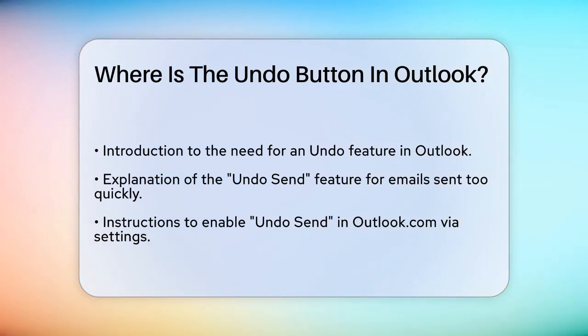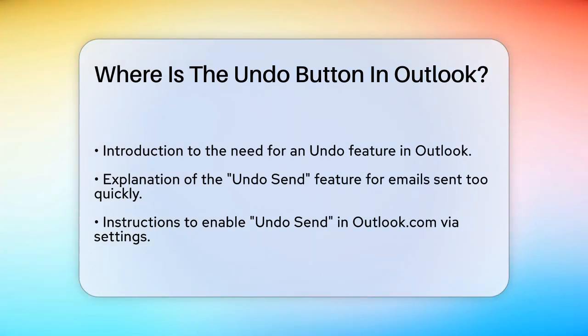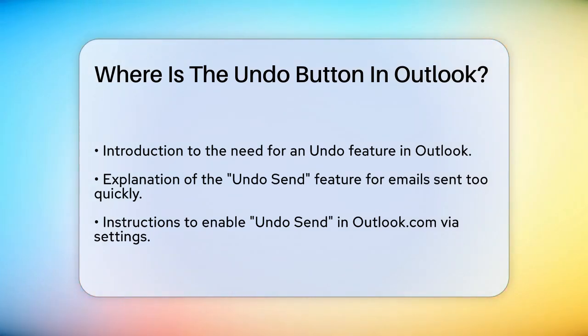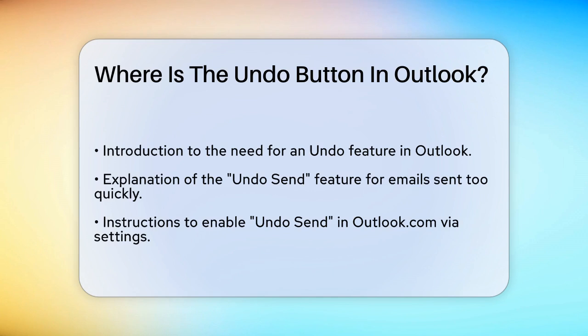First, let's talk about the undo send feature, which is particularly useful if you've sent an email too quickly. In Outlook, you can enable this feature to delay the sending of your emails, giving you a few seconds to cancel them if needed.